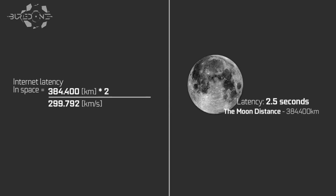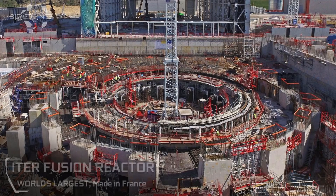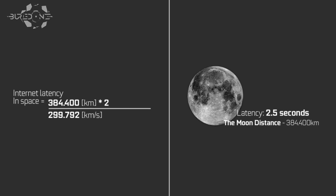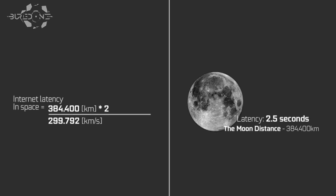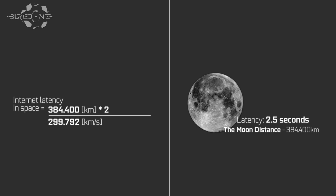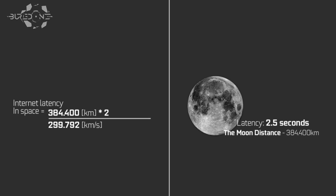Let's say SpaceX gets a moon base and they start mining Helium-3 for fusion reactors on the moon. We'd have a latency of about 2.5 seconds, because the moon is about 384,000 kilometers away. That is fairly okay — a latency of 2.5 seconds is going to be pretty easy for the blockchain to synchronize on the ledgers. No problem at all.